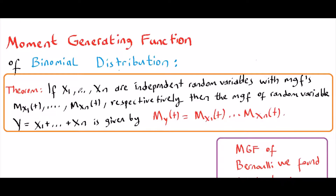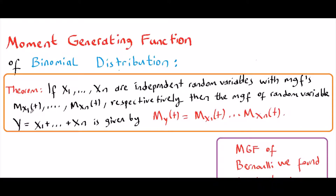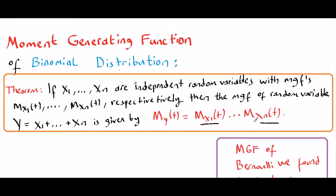If x1 up to xn are independent random variables with moment-generating functions mx1(t) up to mxn(t), respectively, then the moment-generating function of random variable y is the product of the moment-generating functions.